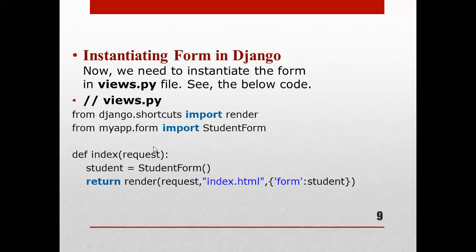We import StudentForm from myapp.forms, then define an index function for the request. Inside, student is set to StudentForm(), and we return render with the request, index.html, and a context dictionary containing the form as 'student'. When the user accesses index.html, it will respond with the form containing two fields: Enter First Name and Enter Last Name.